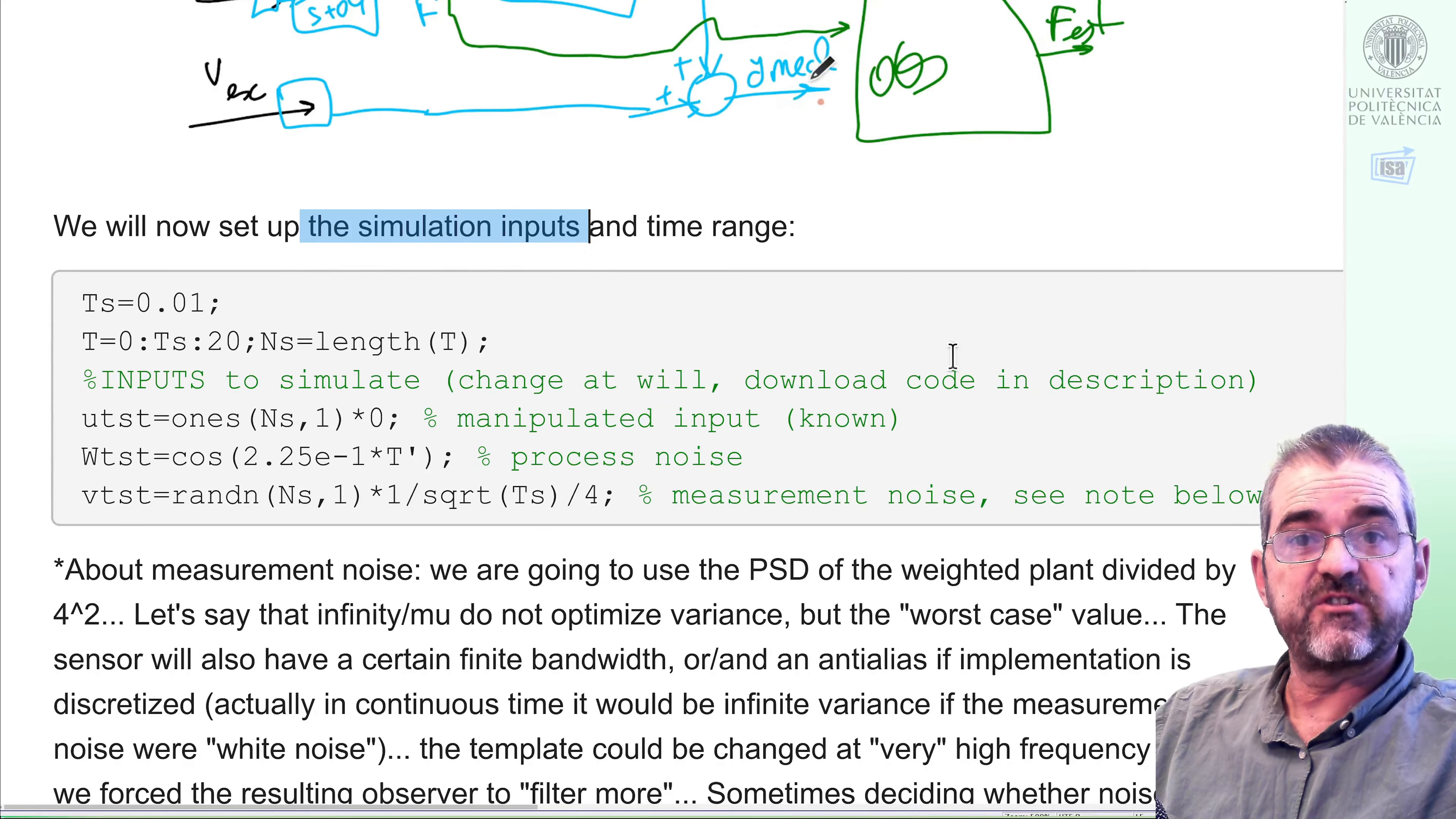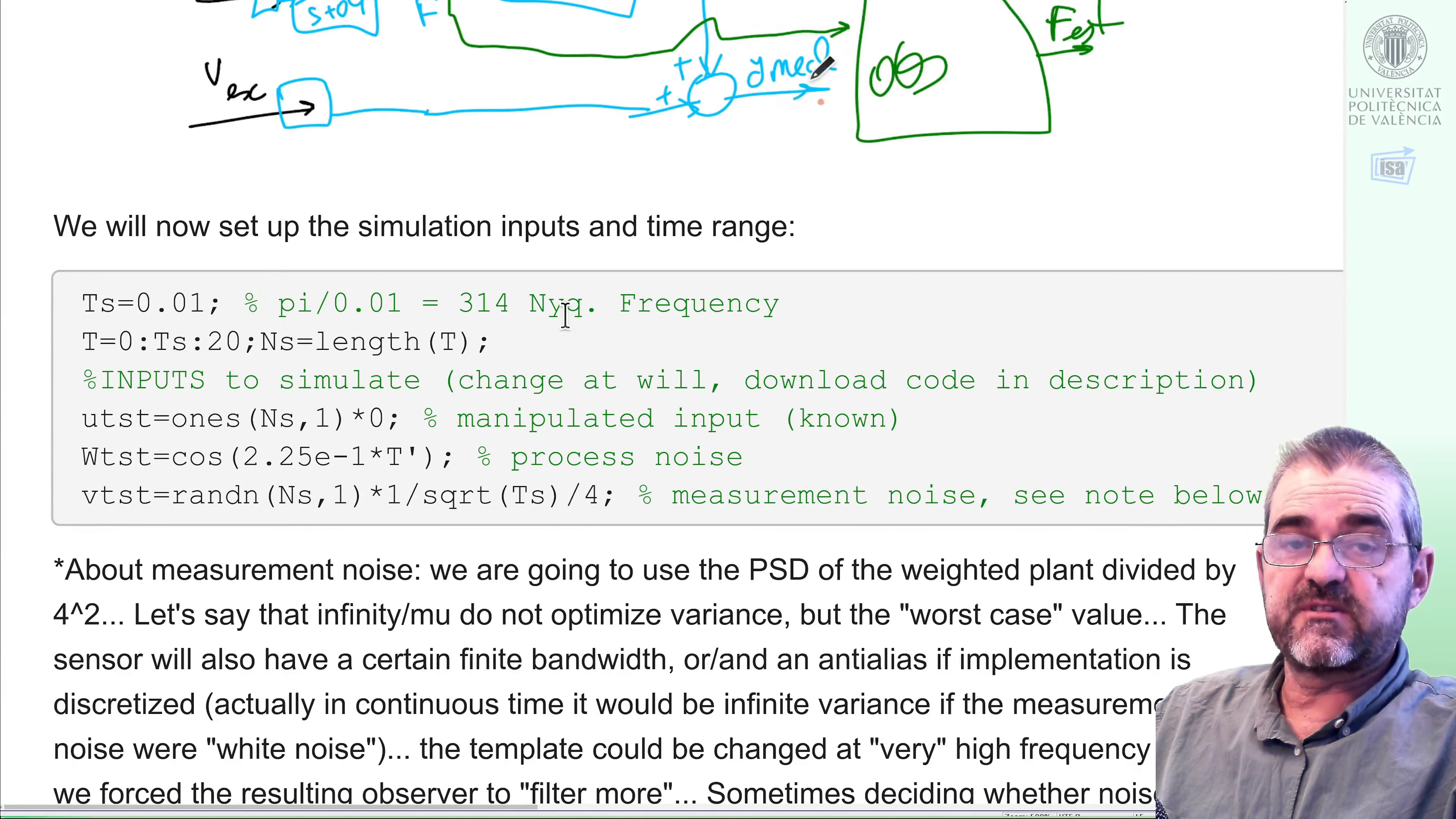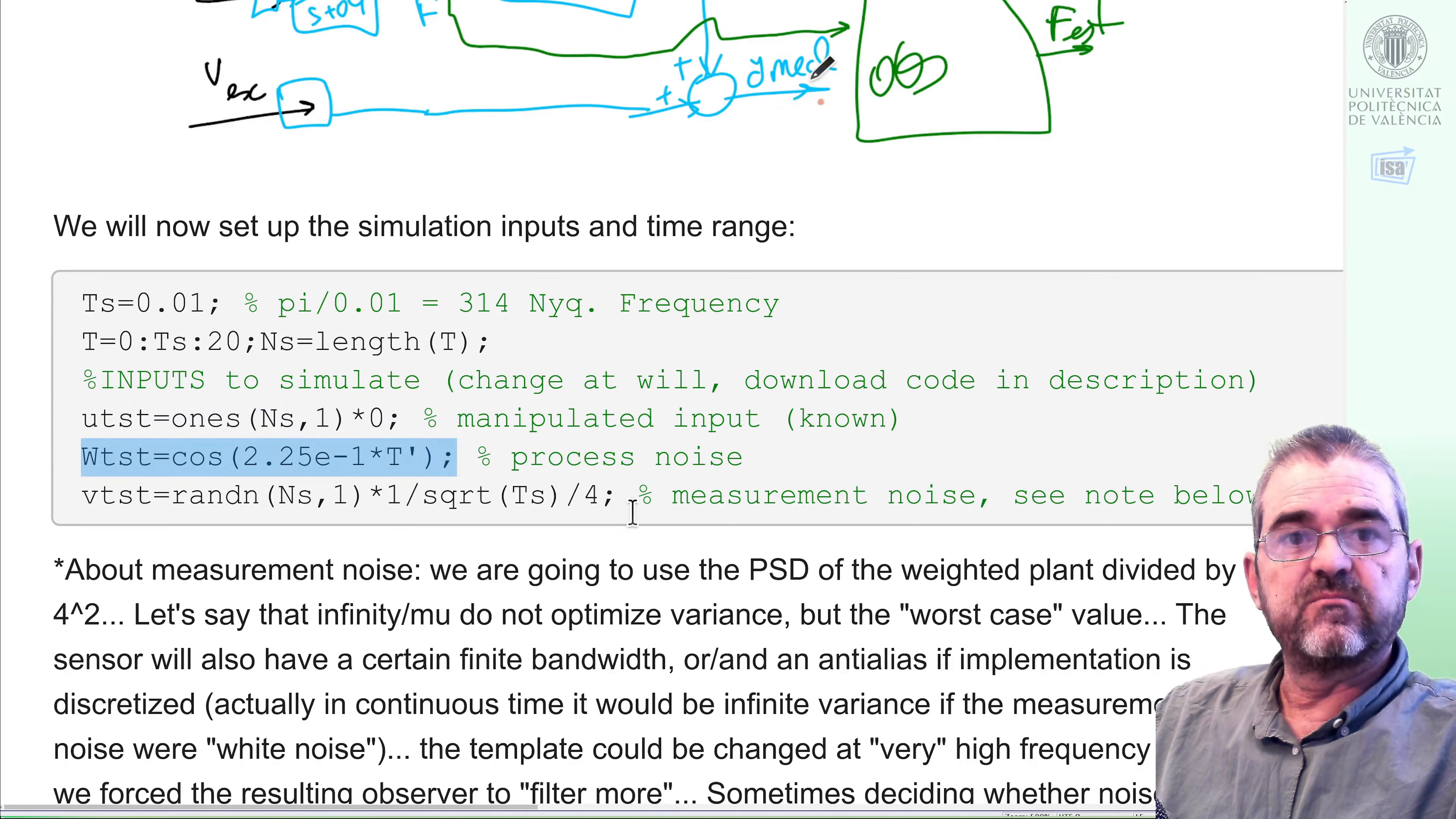So we will set some simulation inputs and time range. We will simulate 20 seconds, our inputs will have a sample time of 0.01 seconds, so our simulation will be faithful up to sort of 300 radians per second. And the inputs to simulate will be, first the known input, we will just set it to zero, because we cannot spend three hours making a lot of simulations, so change it if you wish.